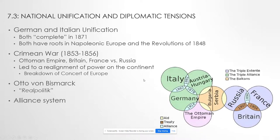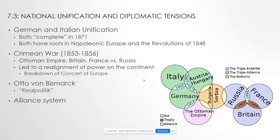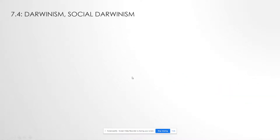Otto von Bismarck and realpolitik I've already mentioned, so I won't belabor that point. The alliance system and Balkan tensions are both things I'll talk about more with World War I. The first major alliance solidified is the Triple Alliance by 1882. In response, about 20 years later, you get the Triple Entente. These two alliances essentially become World War I — Italy eventually breaks from the Triple Alliance and joins the Entente. We also see diplomatic tensions playing out in the Balkans in 1913, again more context for World War I.